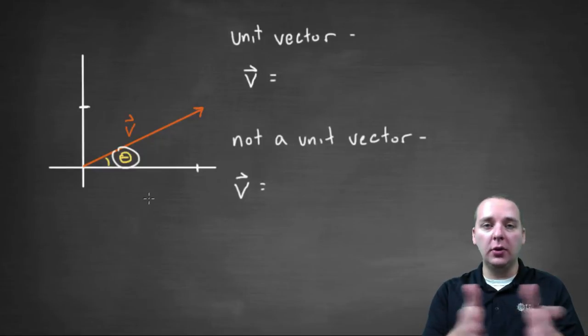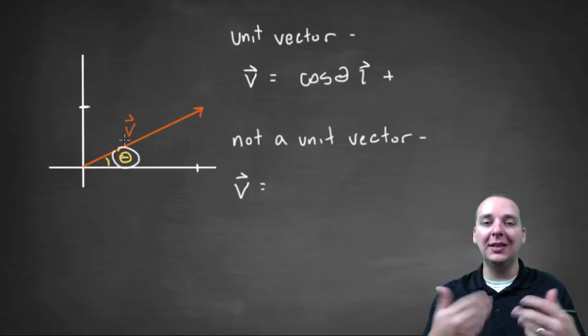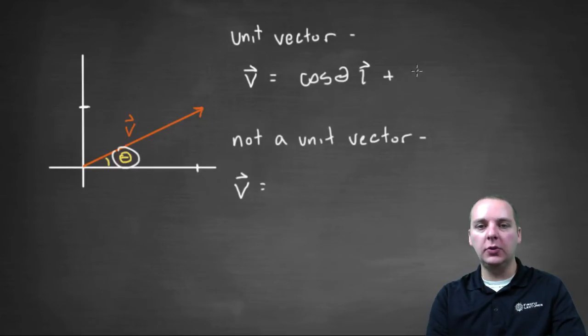We know that the horizontal displacement would be the cosine of the angle, so it will be cosine of theta i plus, and then the vertical component will be the sine of theta. So I have sine of theta j.